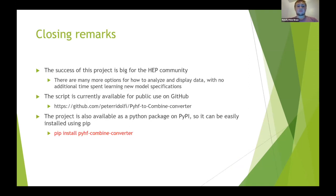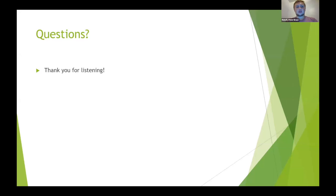Some closing remarks: the success of this project is very significant for high energy physics in general, because now everybody has the option to use PyHF or Combine to display and analyze their data and take advantage of each one's nuances. The script is available for public use on GitHub and has also been published as a Python package on PyPI, installable with pip install pyhf-combine-converter. Nice talk — it certainly enables CMS to leverage the PyHF infrastructure.